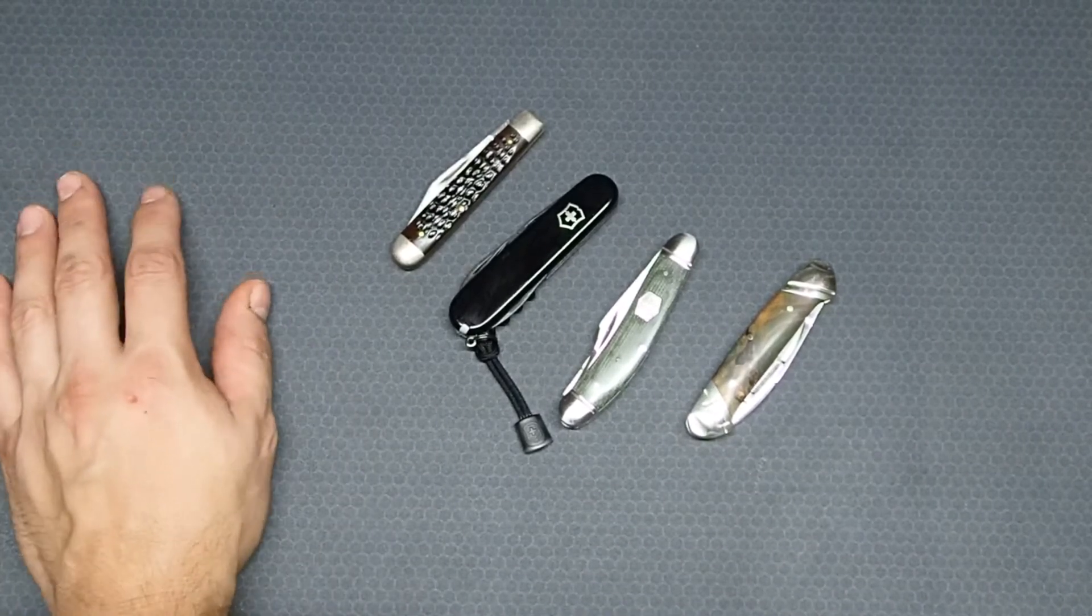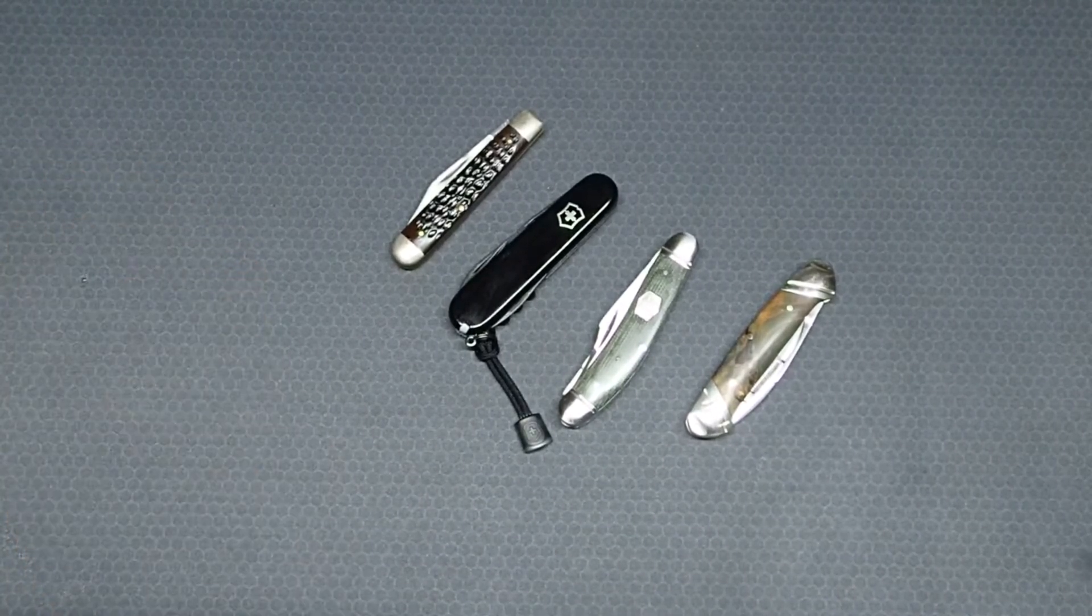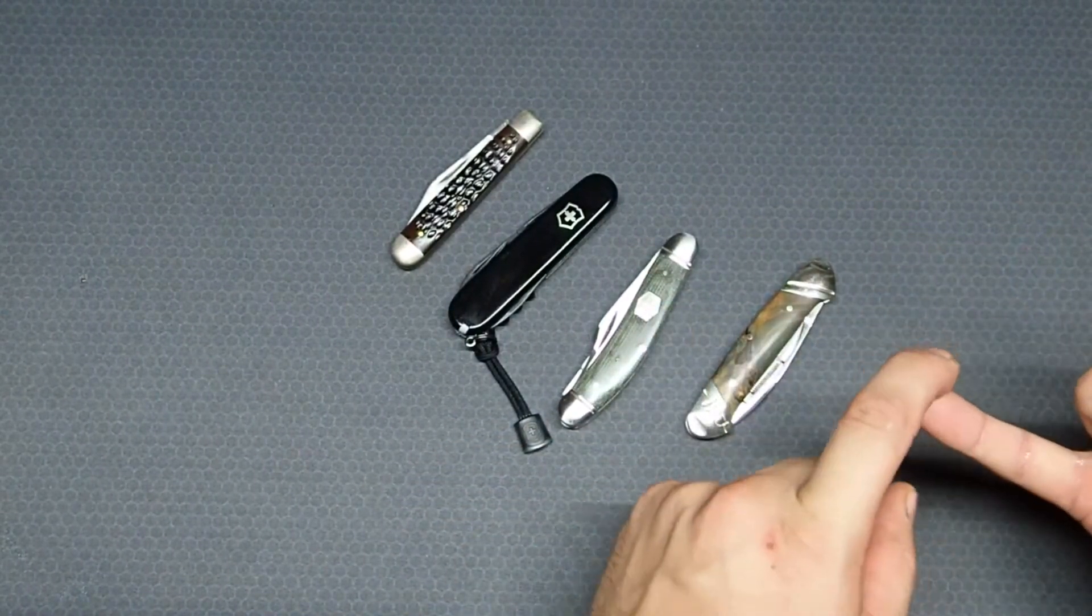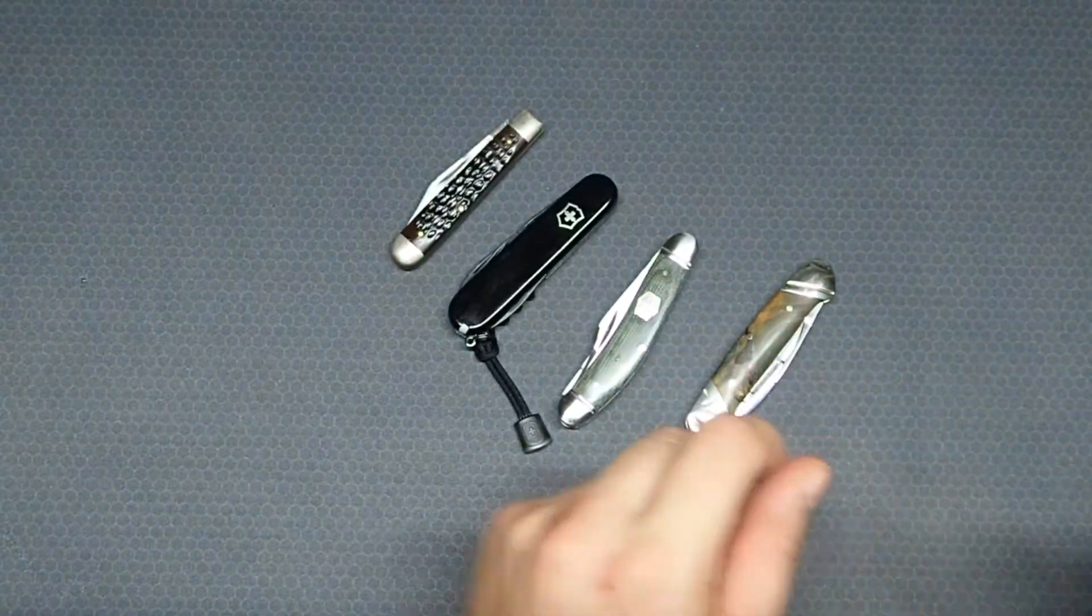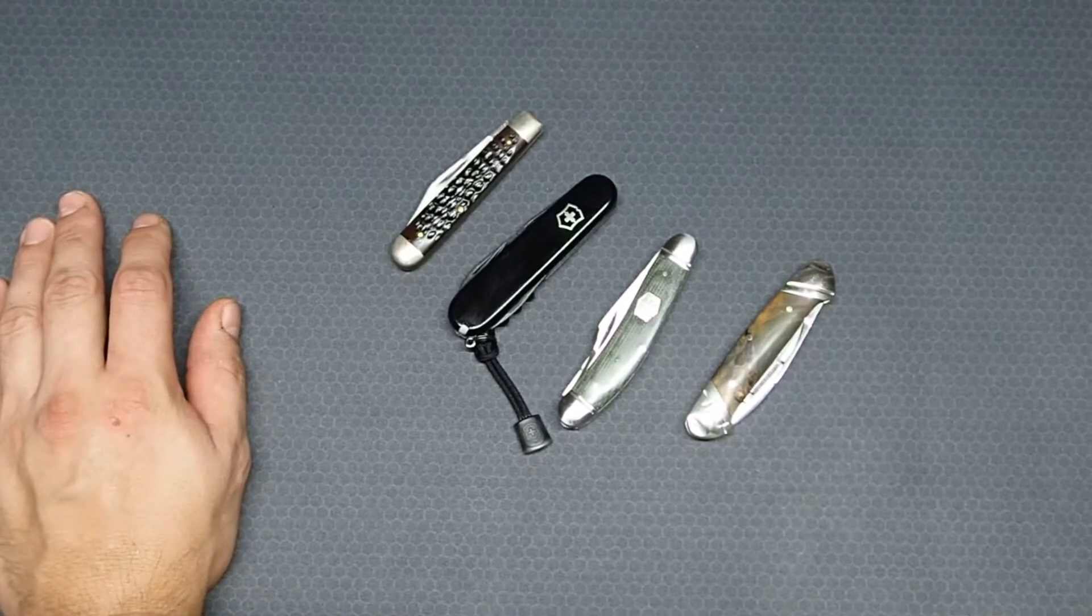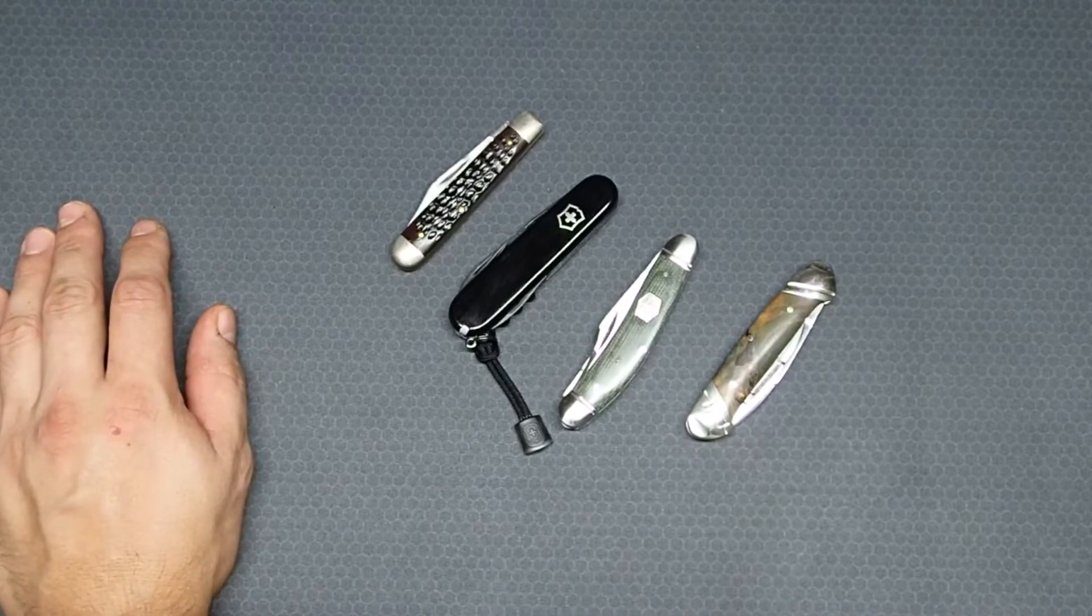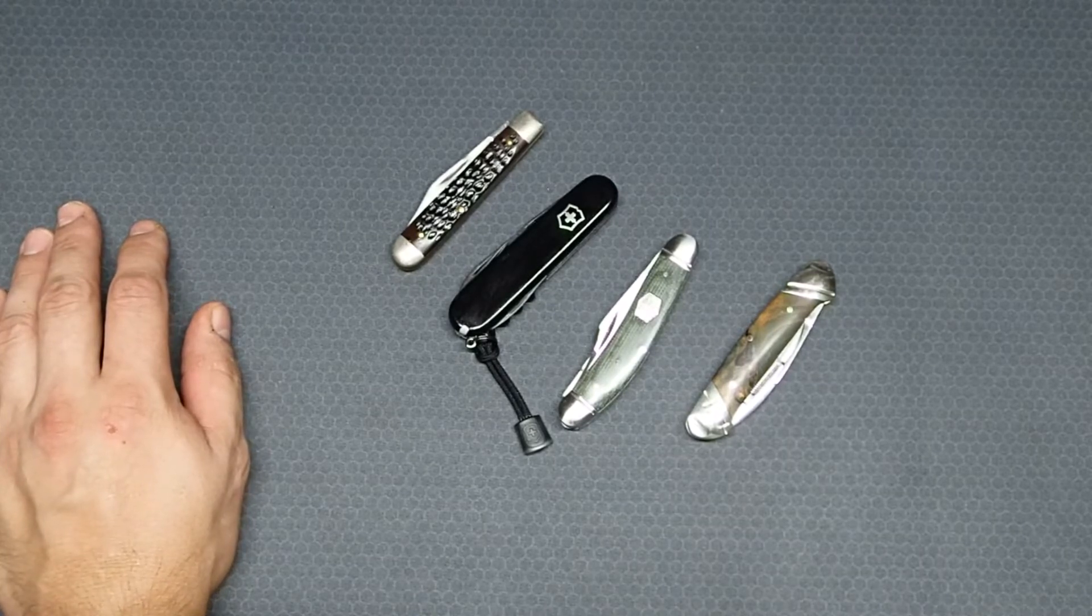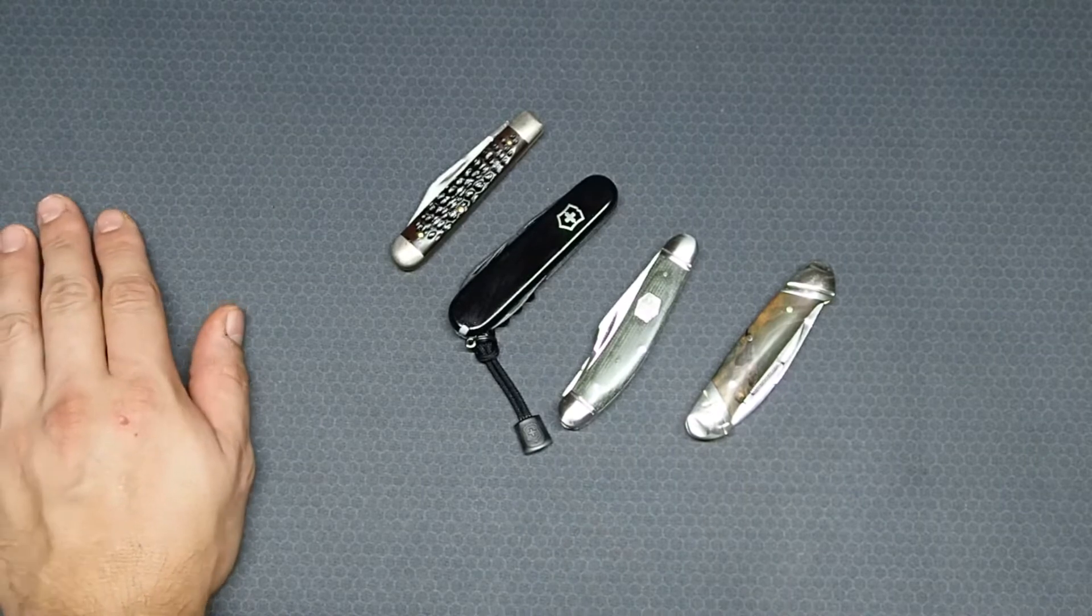When you first think about traditional pocket knives, typically you think about lock mechanisms being either slip joint, which is no locking mechanism, or your back locks are very common. And then if you go into the multi-tool world, you think of the Victorinox Swiss Army Knives, also no locking mechanisms.